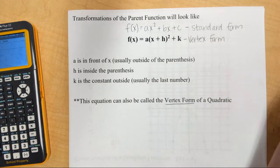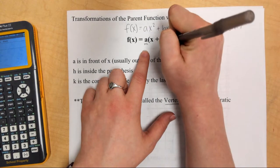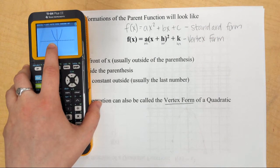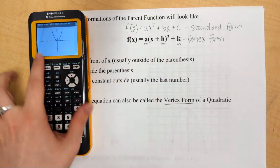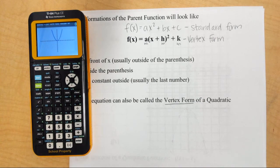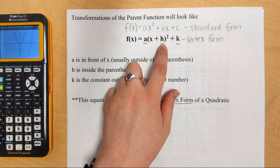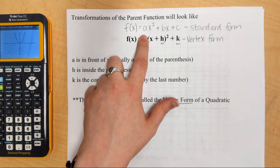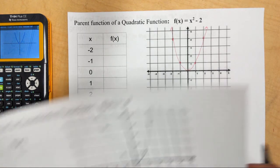Between today and Tuesday, we are going to investigate how these three numbers — a, h, and k — change my graph and what they do to my parent function. My parent function right now has none of these numbers, so when I add them in, we want to figure out how it changes the graph. Today, we are going to worry about h and k — we'll worry about a next week.